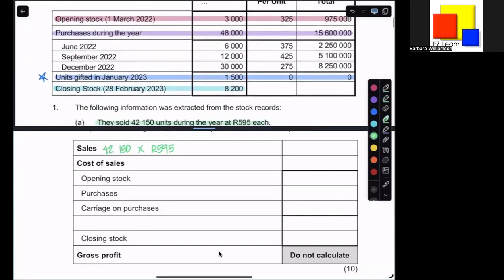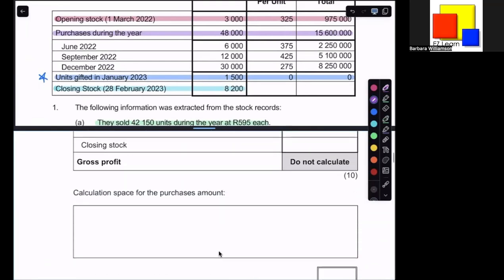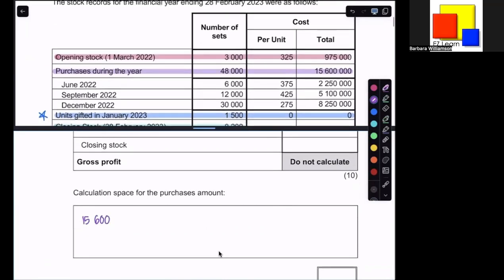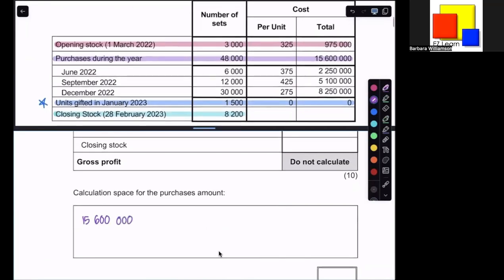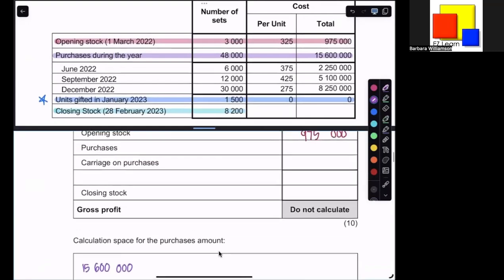Now, at this stage, we can also pop in some of the information from the stock records. We can see there's the opening stock of 975,000. We can see that we had purchases of 15,600,000, but there is a space for calculating purchases. So obviously, there's something a little bit more interesting there that I need to use. So we'll just pop it in the calculation space. We don't yet know about carriage, etc. We don't know the value of closing stock either, but we do know that it's 8,200 units, and we'll then just need to bring in what the value is, obviously, from using the weighted average calculation that we'll use.